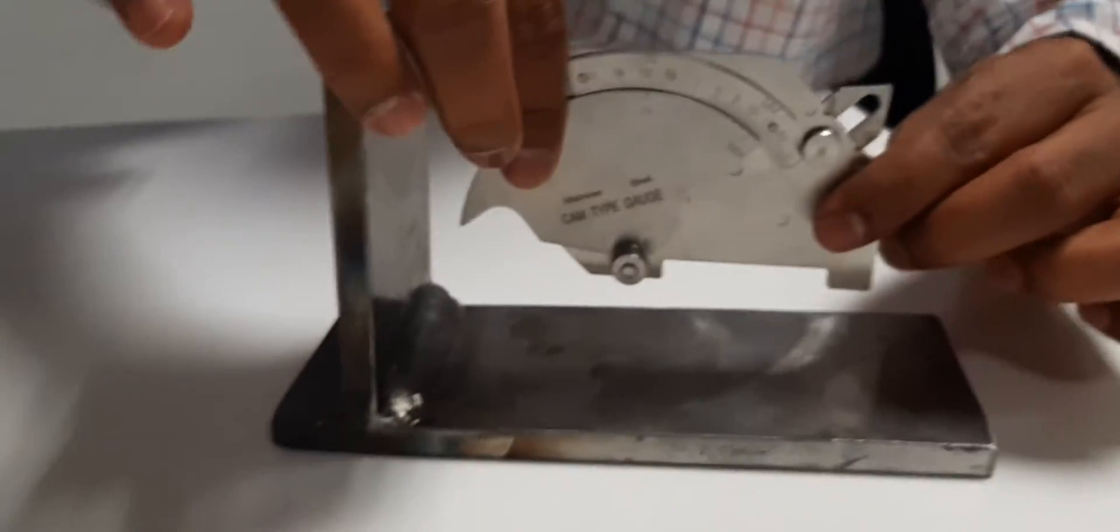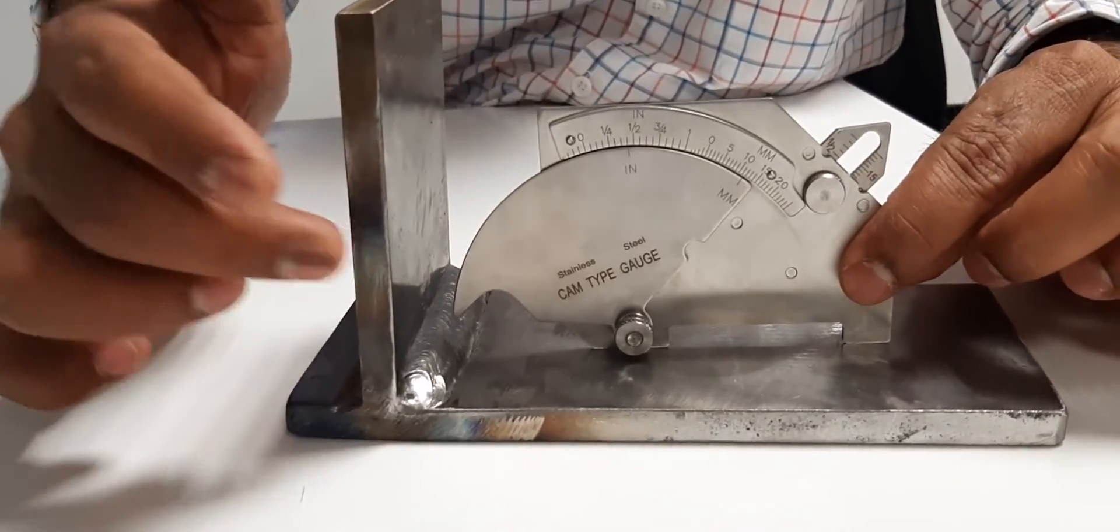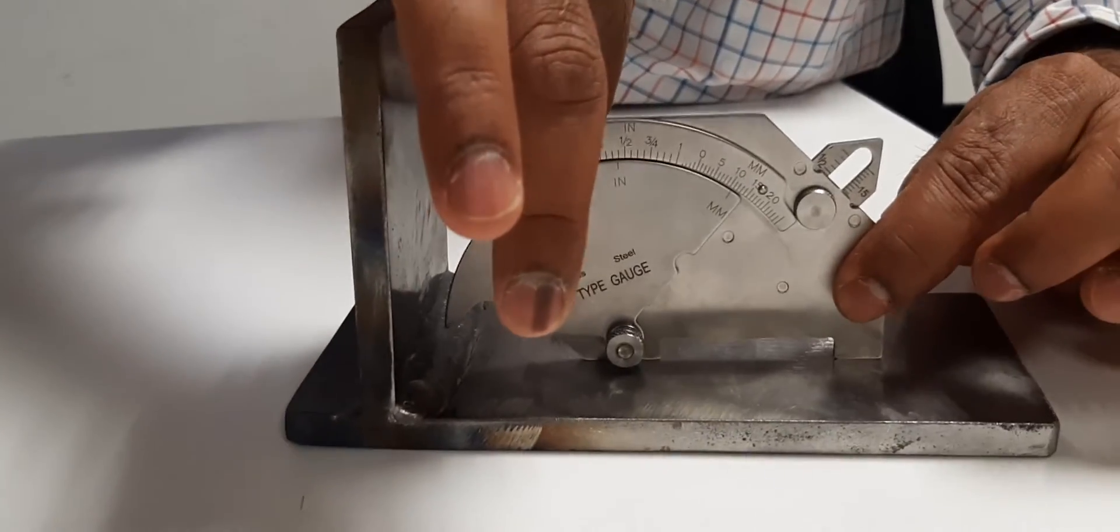Fourth, we will go to how to check the leg length. This is a fillet weld joint. Fix like this and go to weld toe area, you can see the reading for the measurement.